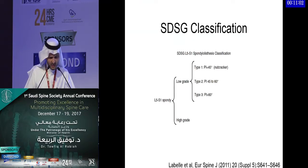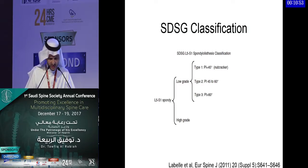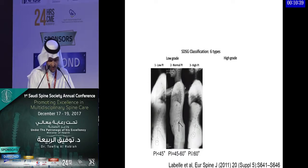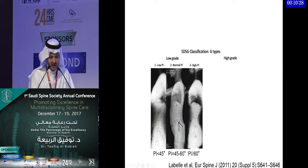The spinal deformity classification divided spondylolisthesis into low-grade and high-grade. The low-grade is further divided into low pelvic incidence, normal pelvic incidence, and high pelvic incidence. It is postulated that those with high pelvic incidence are more subject to progression and more subject to developing greater back pain.